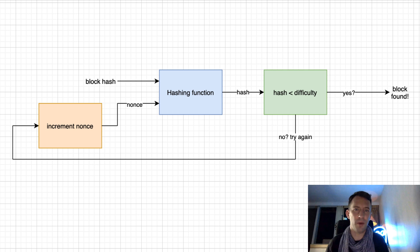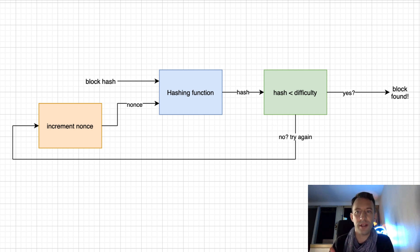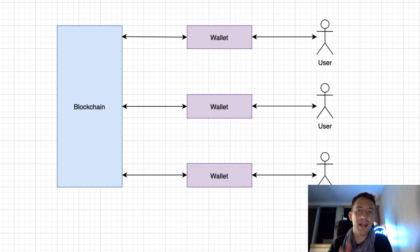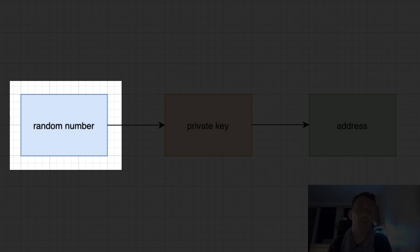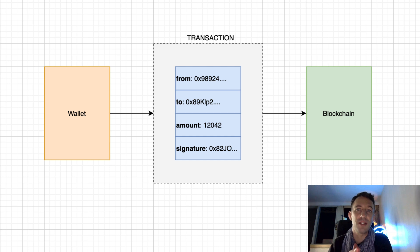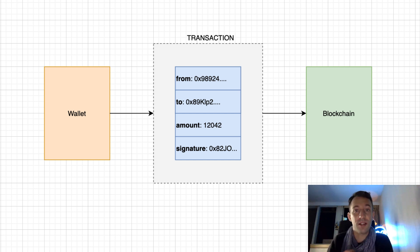But why do we bother with this cryptographic puzzle? What we care about is forcing miners to do a computationally difficult calculation which requires them to spend money, in order to make sure they have an interest to be honest and only include valid transactions. Wallets are external software, and each user of Bitcoin must have their own wallet. Wallets have two main functions: manage private keys and send transactions. Wallets create an address by generating a random number, which is used to create a private key and an address. You can go from the private key to the address but not the other way around. The private key must be kept secret, but the address is public. When a user wants to send bitcoin, the wallet creates a transaction with the recipient, the amount, and a signature generated using the private key, which guarantees that the sender really intended to send the transaction.